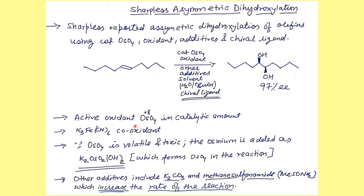Osmium tetroxide is used in catalytic amount because it is very expensive and very toxic. To reduce its quantity to the catalytic level, potassium ferricyanide is used as a co-oxidant. Since osmium tetroxide is quite volatile as well as toxic, it is always advisable to use it as potassium osmate, which generates osmium tetroxide during the course of the reaction. Apart from that, additives like potassium carbonate and methanesulfonamide are used to increase the rate of the reaction — this is a common interview question.